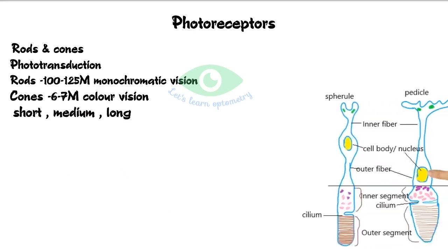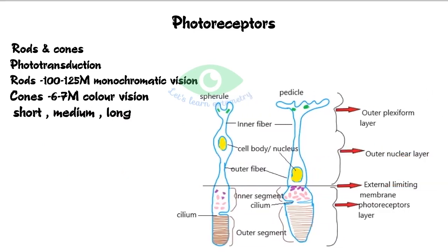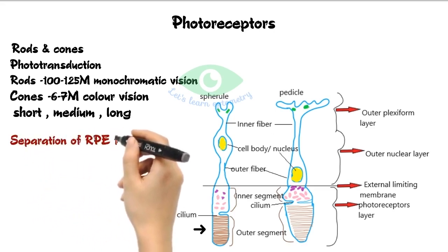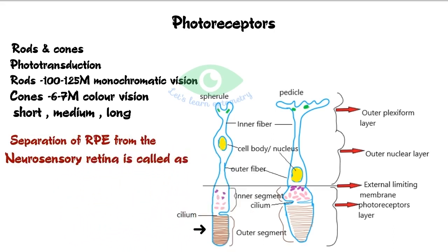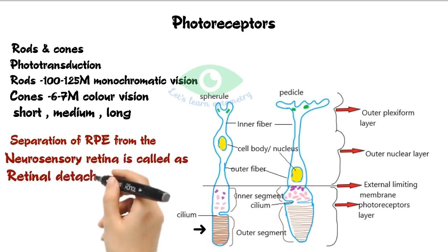The basic structure of rods and cones begins with the outer segment, which is rod-shaped in rods and cone-shaped in cones. It contains discs which hold the visual pigment used in phototransduction. After a disc's phototransduction ability is spent, it is shed by the rods and cones and metabolized by the adjacent RPE cells. There are no connections between the outer segment of photoreceptors and the RPE due to embryological differences, so a potential space exists — and separation of the RPE from the nine layers is called retinal detachment.